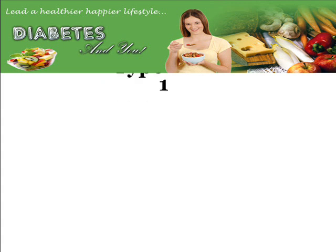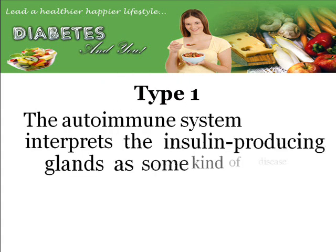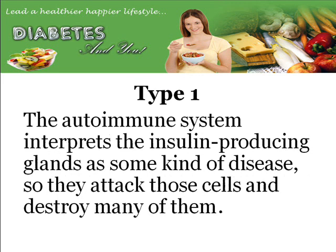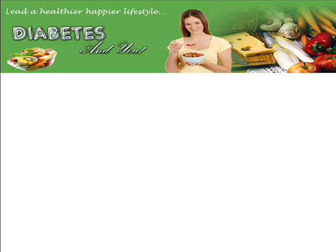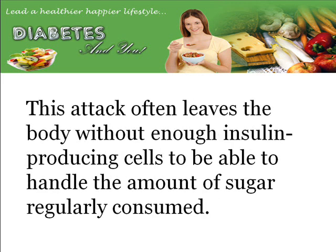First, let's discuss type 1 diabetes. Type 1 diabetes is a problem that is believed to be caused by the body attacking itself. When this occurs, the autoimmune system somehow comes to interpret that the insulin-producing glands in your body are actually some kind of disease, so they attack those cells and destroy many of them. This attack often leaves the body without enough insulin-producing cells to be able to handle the amount of sugar regularly consumed.